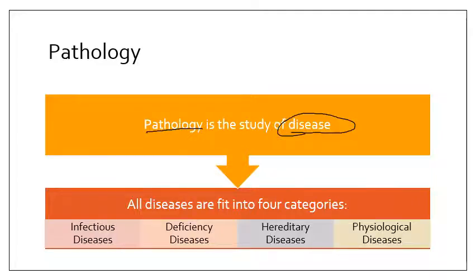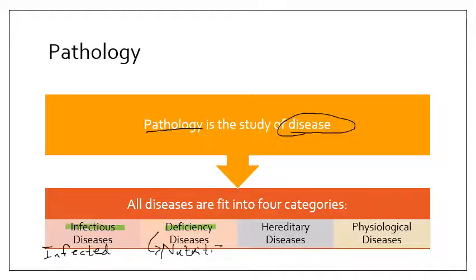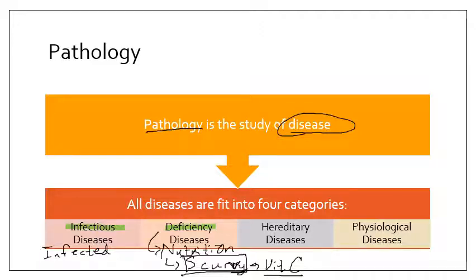The first category of disease is what we call an infectious disease. This is essentially something that has infected you. If something infects you, it means something is kind of living inside of you that you don't want to be there. You can also have what's called a deficiency disease, which we looked at when we studied nutrition. Basically, it means that you are missing some nutrition or something in your body. For example, scurvy is a lack of vitamin C, which meant your body wasn't able to produce certain chemical reactions, giving you a disease. Deficiency diseases are quite easy to treat because the treatment is to get the thing you're deficient in.